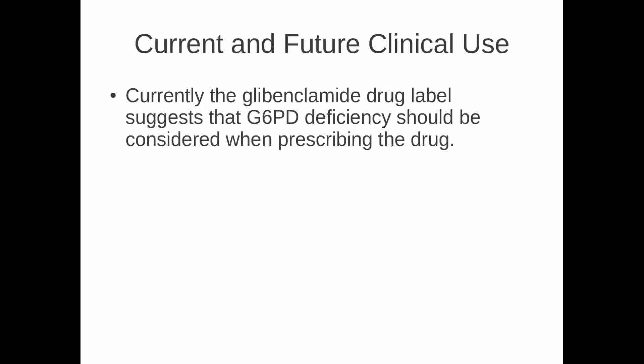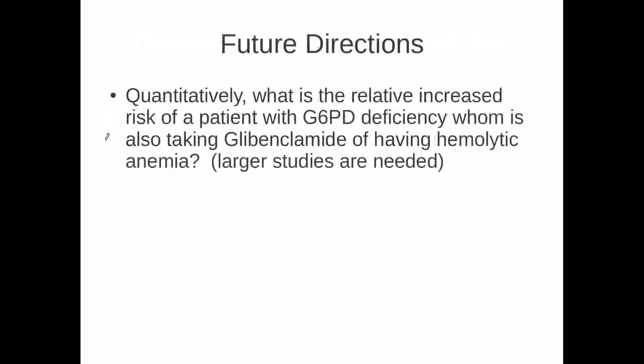Currently, the FDA on the drug label suggests that those with glucose-6-phosphate dehydrogenase deficiency should consider using an alternative drug. So we're already there in a way in terms of pharmacogenomics, where physicians are made aware of the fact that there should be a test for this deficiency.